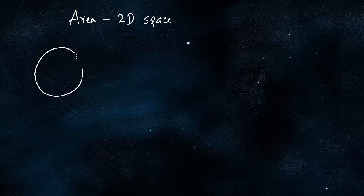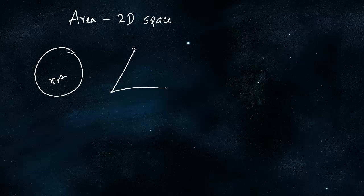Basic 2D objects include a circle, whose area is pi r squared. Pi is the ratio of the circumference of the circle to the diameter. Then there is the triangle, whose basic area is half into base into height. We also have a rectangle, whose area is length into breadth.